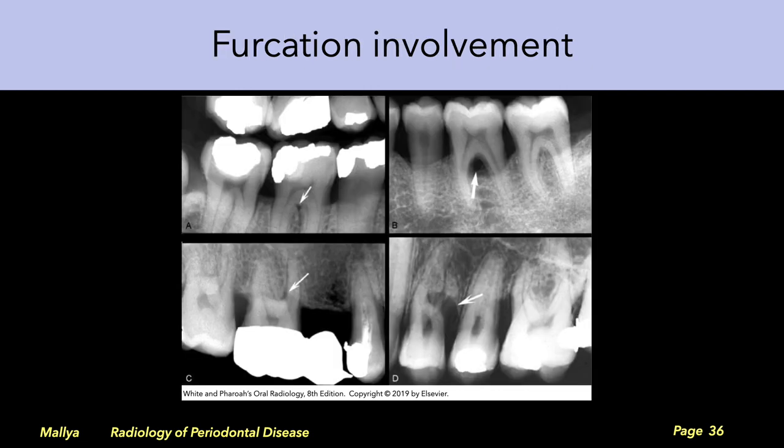Next, evaluate the region of the furcation. For each multi-rooted tooth, trace the periodontal ligament space along the root to the area of the furcation. Determine the level of bone in the region of the furcation.